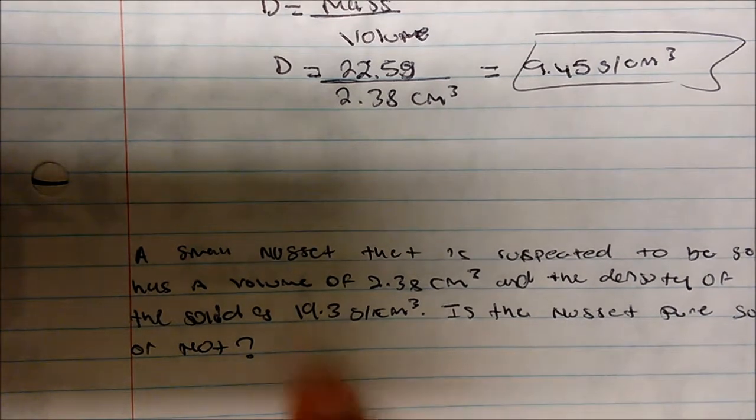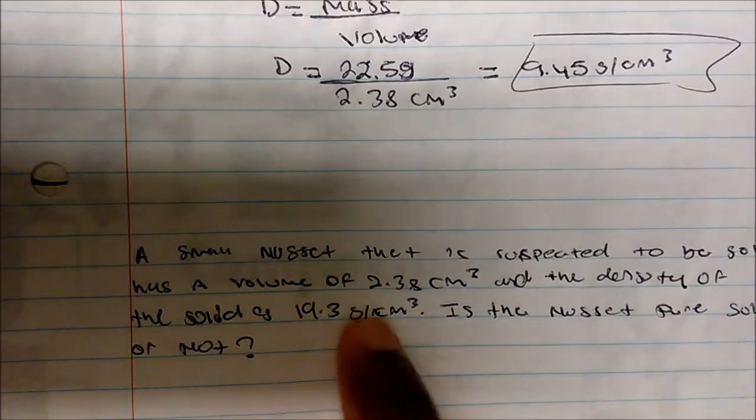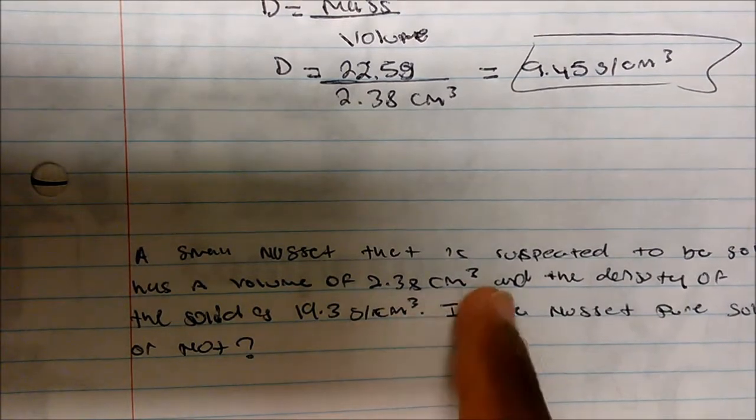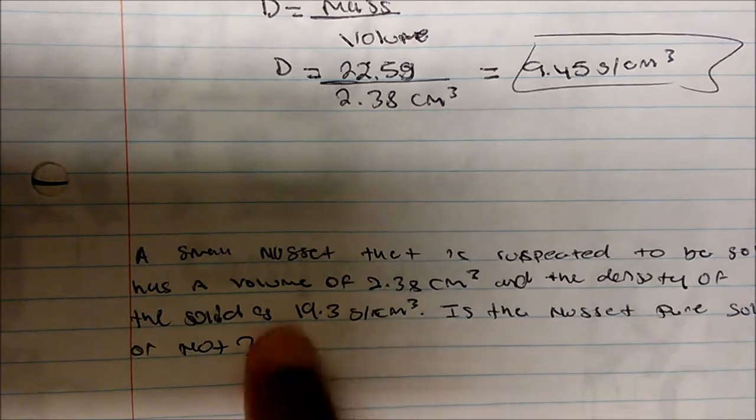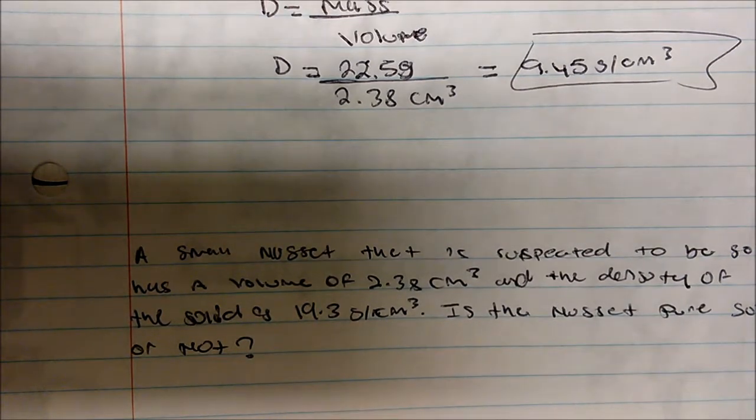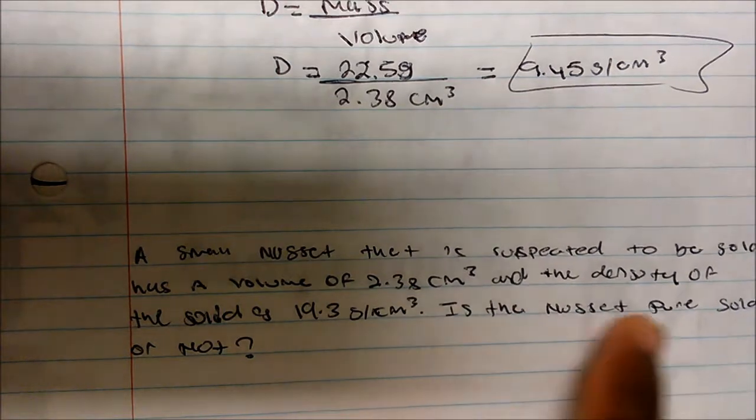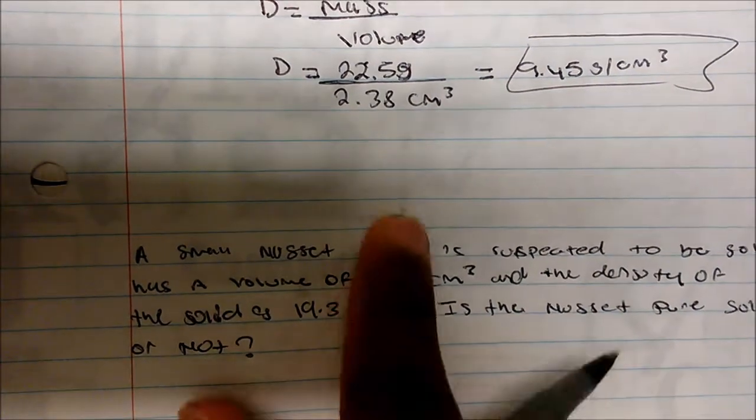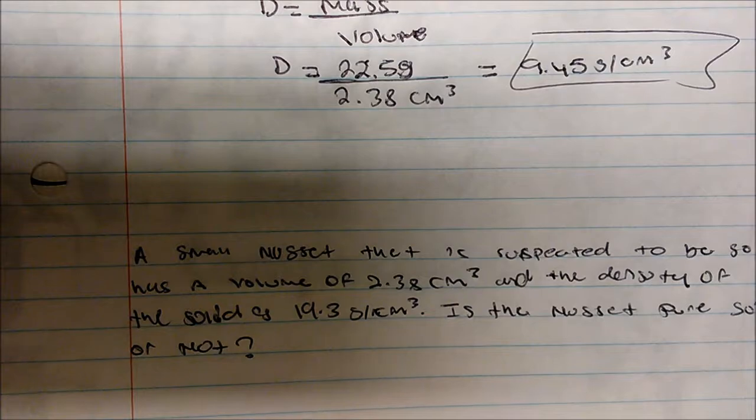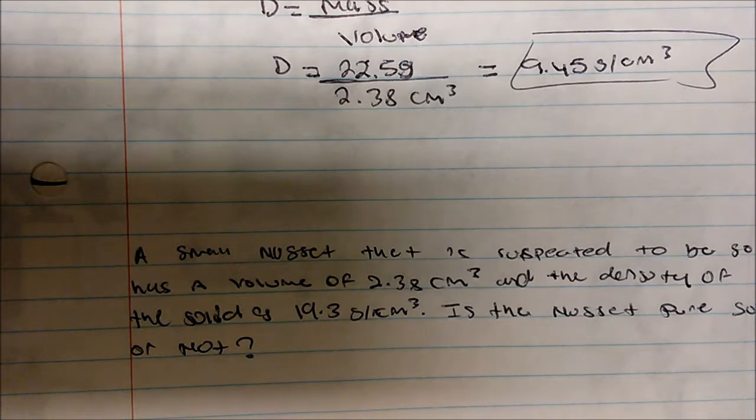Okay, so if I look at this, well, it says a small nugget that is suspected to be gold, has a volume of 2.38 cubic centimeters. And the density of solid is 19.3 grams per cubic centimeters. Is the nugget pure gold or not? Again, this part I'm going to ignore. I just wanted to see the process. I just want you guys to see the process of how I manipulate the equation.